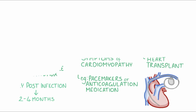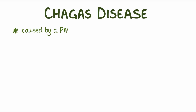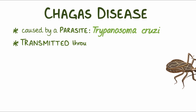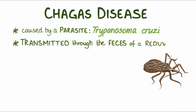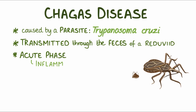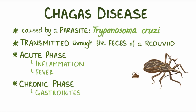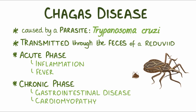As a quick recap, Chagas disease is caused by an infectious parasite, Trypanosoma cruzi, that's most commonly transmitted through the feces of a reduviid bug after a bite. In the acute phase, symptoms include inflammation and fever, and in the chronic phase there's gastrointestinal disease and cardiomyopathy.